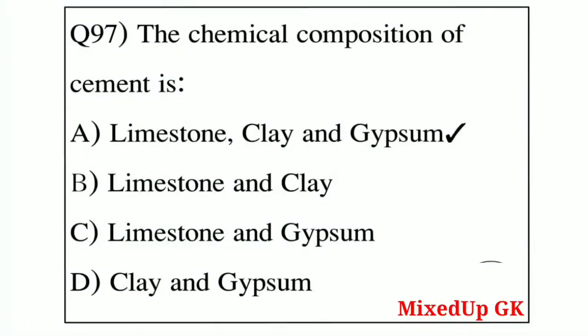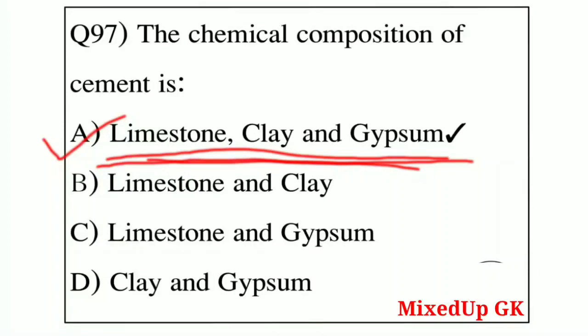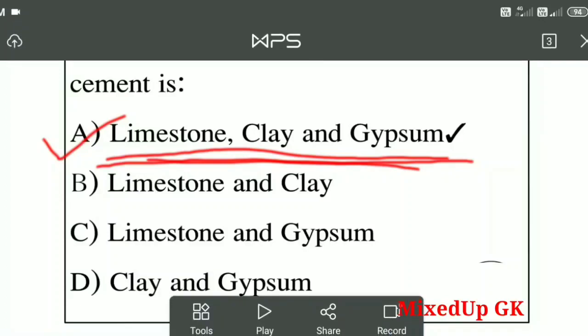Question number 97: the chemical composition of cement is — Option A: limestone, clay and gypsum, Option B: limestone and clay, Option C: limestone and gypsum, Option D: clay and gypsum. The correct answer is Option A — limestone, clay and gypsum. These three materials are mixed to prepare cement.